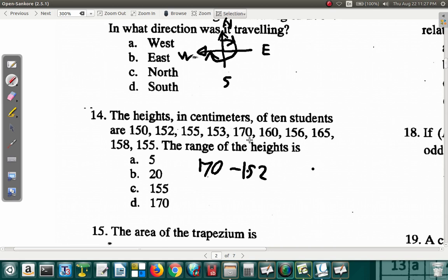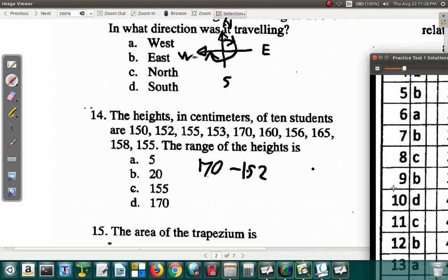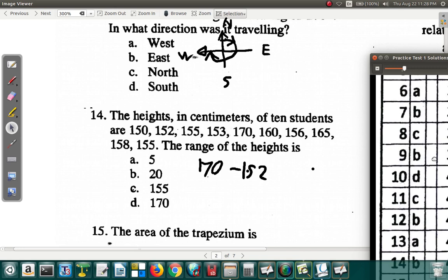70 minus 50 is 20. So the answer is B. Question 14, answer is B.